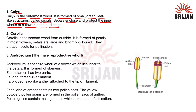Corolla is the second whorl from outside, coming after the calyx, and is formed of petals. In most flowers, petals are large and brightly colored, which attracts insects for pollination.